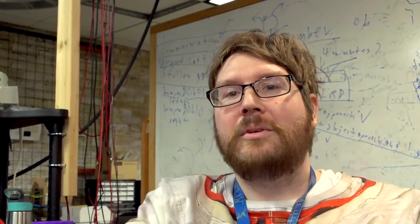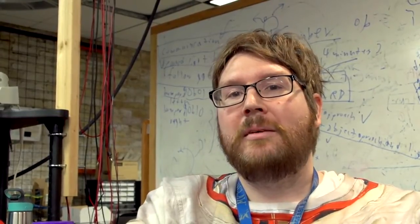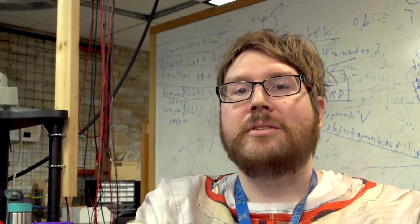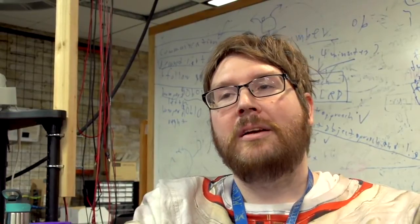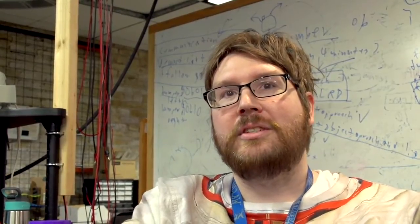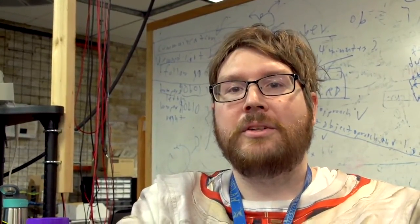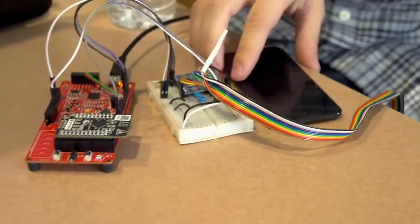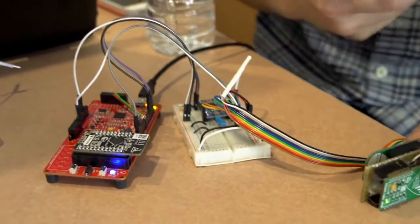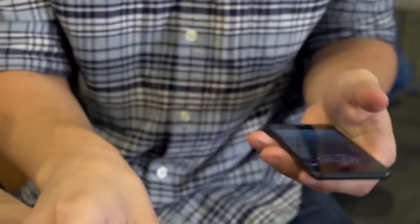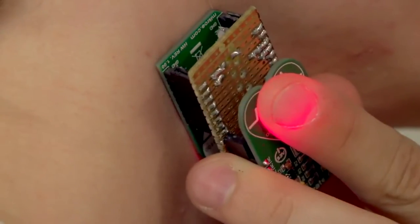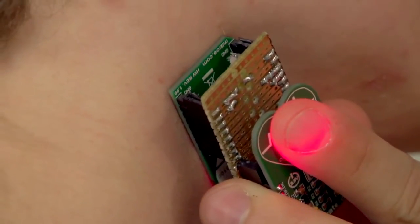We saw a technique called pulse transit time. Basically, you take your pulse at two different points in your body, and through some physics you can find your blood pressure. We decided we could make this compact into one single sensor that you could just slip over your finger and touch your neck at the same time.